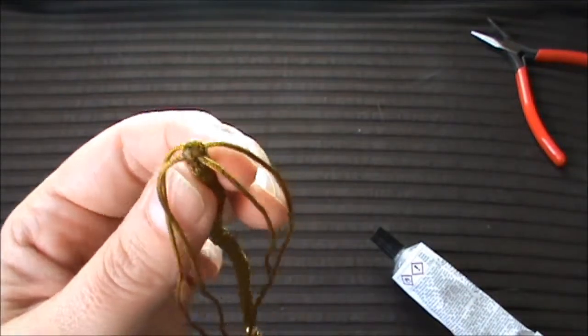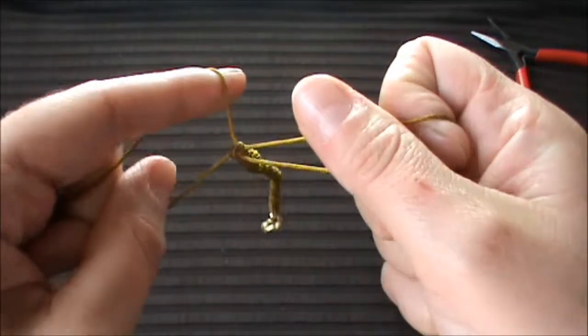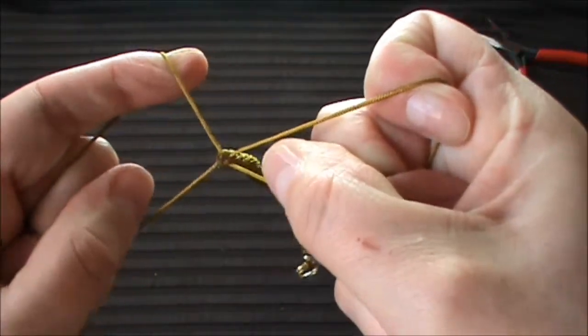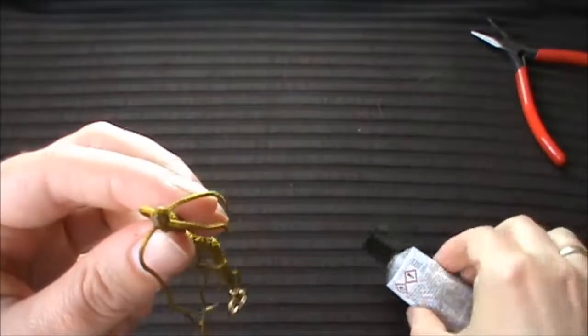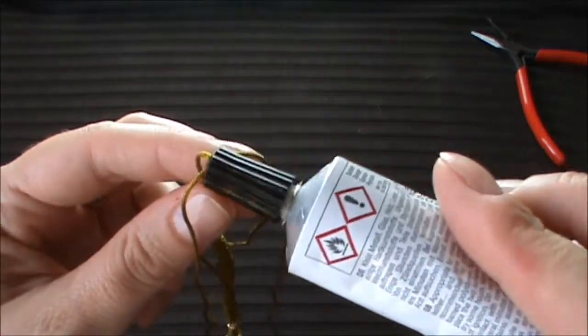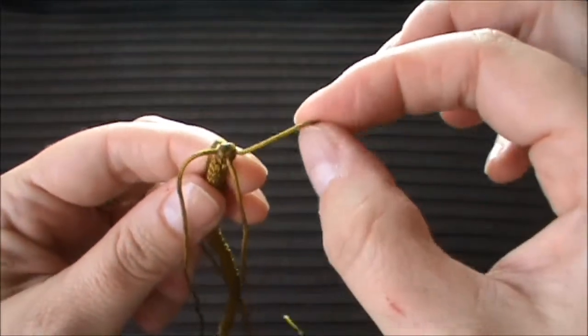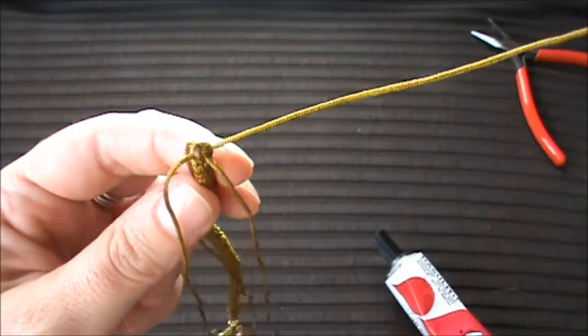When you did the last knot, it's very important that you pull the strings tight. And take your glue and drip a drop of glue on the last knot and let it dry. And after it you can trim the excess cord thread.